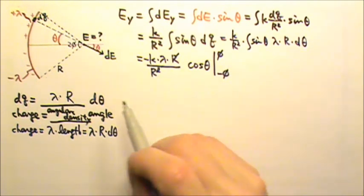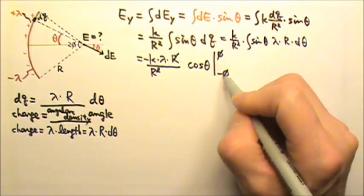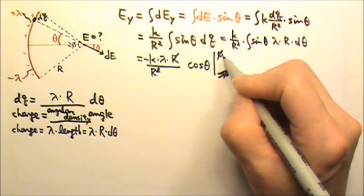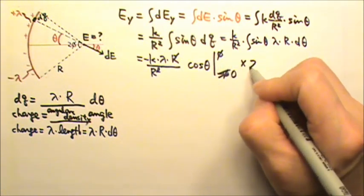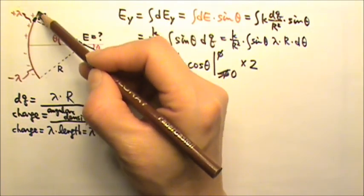It turns out that in this case, we cannot go from negative φ to φ. We must go from 0 to φ and then double. We have to go from 0 to φ so we can find the field contribution by this part of the charge. And then we know the negative side gives us the same contribution, so that's why we double it.